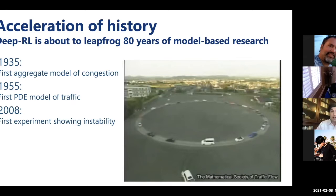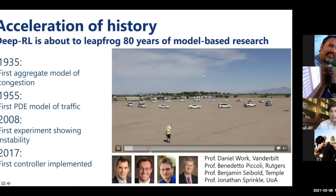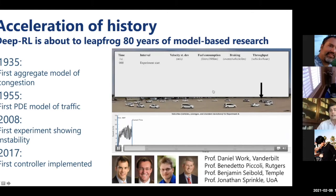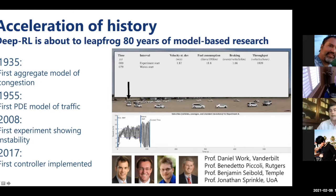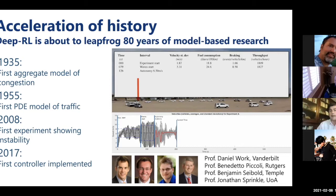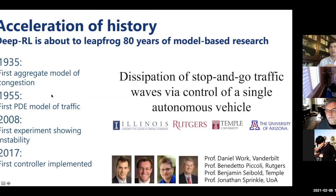Fast forward another 10 years: this team led by Dan Work from Vanderbilt did the same ring experiment but inserted a self-driving vehicle, identified by the black arrow—first driven by a human, which shows how bad humans are at regulating. Then the algorithm was engaged and essentially smoothed traffic. This was a pivotal event in the history of mixed autonomy traffic—the first time someone demonstrated repeatedly and in a controlled environment the ability to reduce traffic waves in that way.